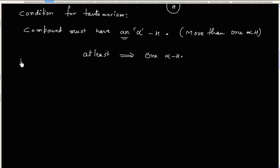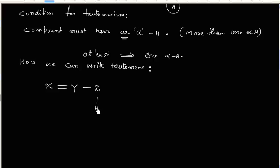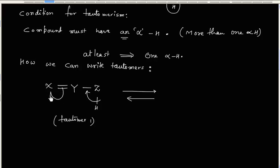To write tautomers, we take tautomer 1 and convert it into tautomer 2. We break the X–H bond and form a new pi bond, then break the existing pi bond to make a lone pair, so X will have a negative charge. The H⁺ is then added at the new position, giving tautomer 2.